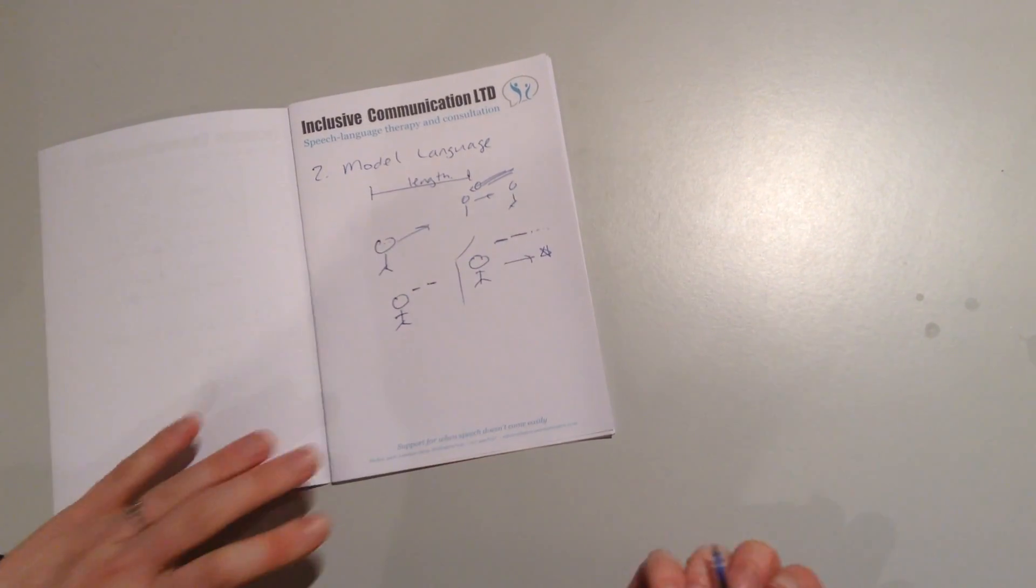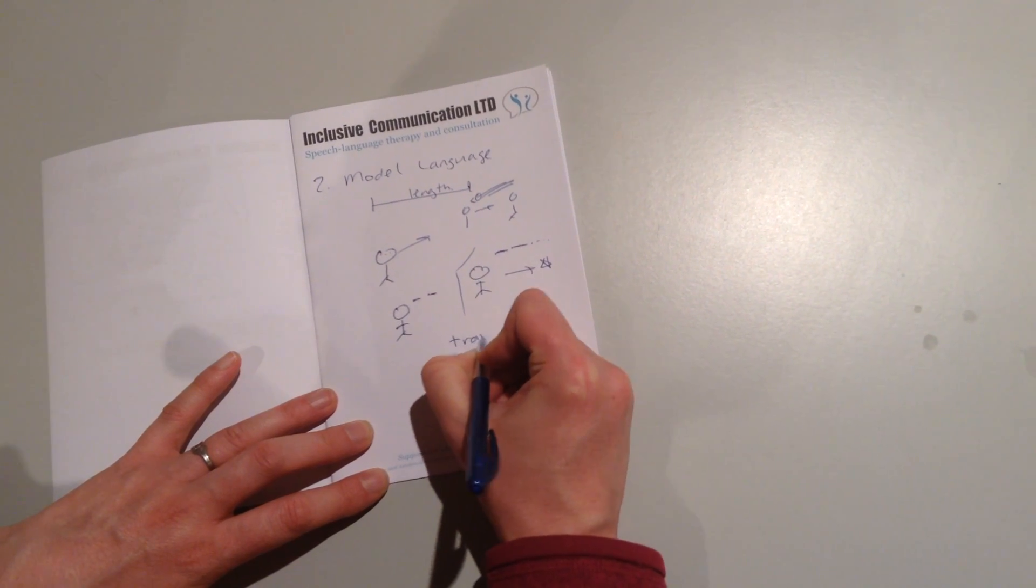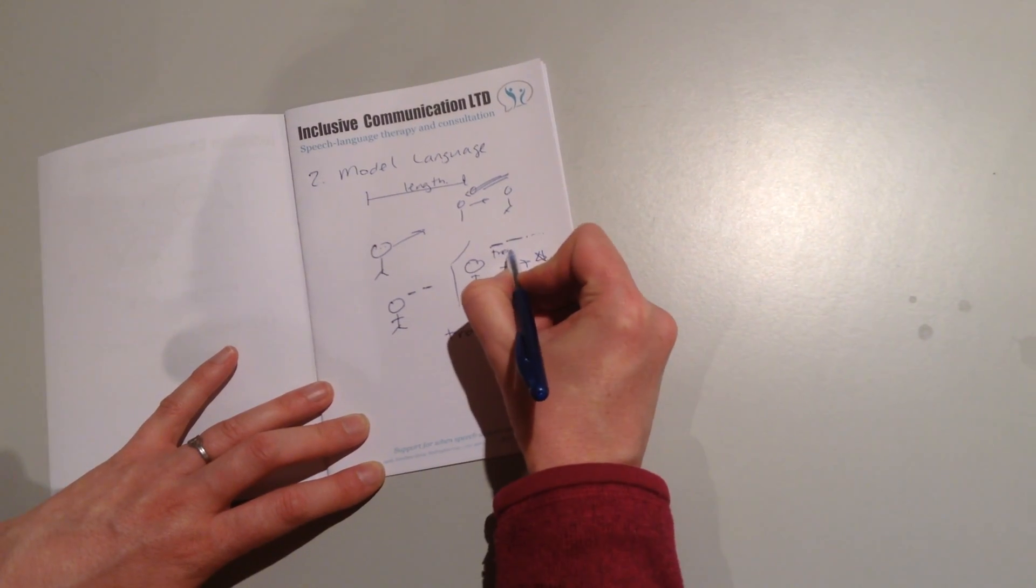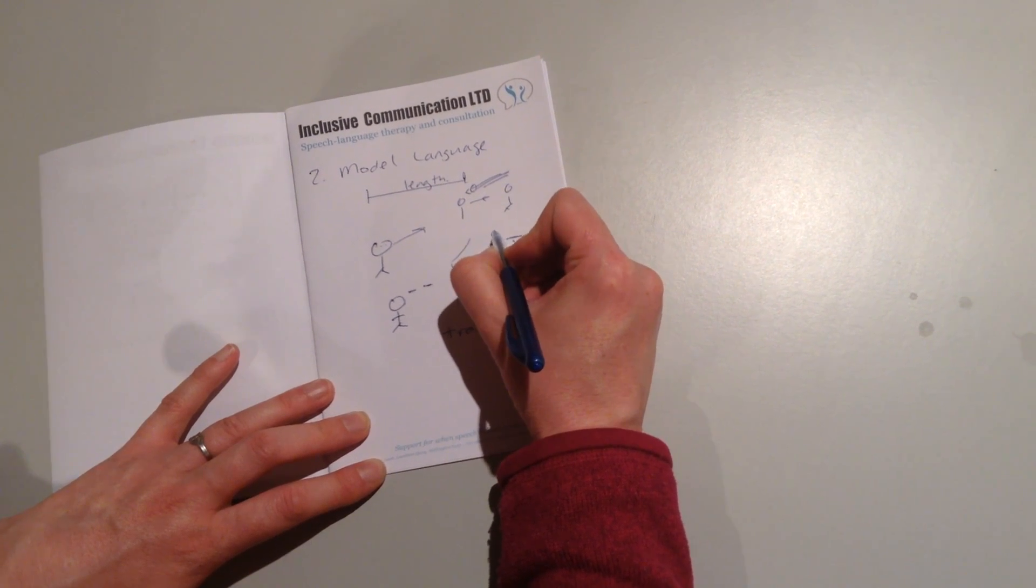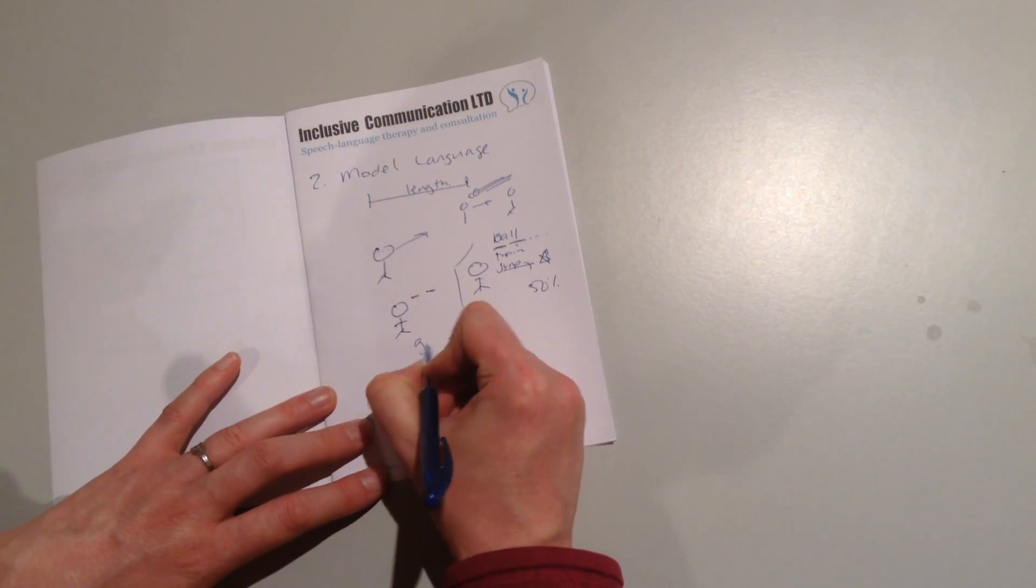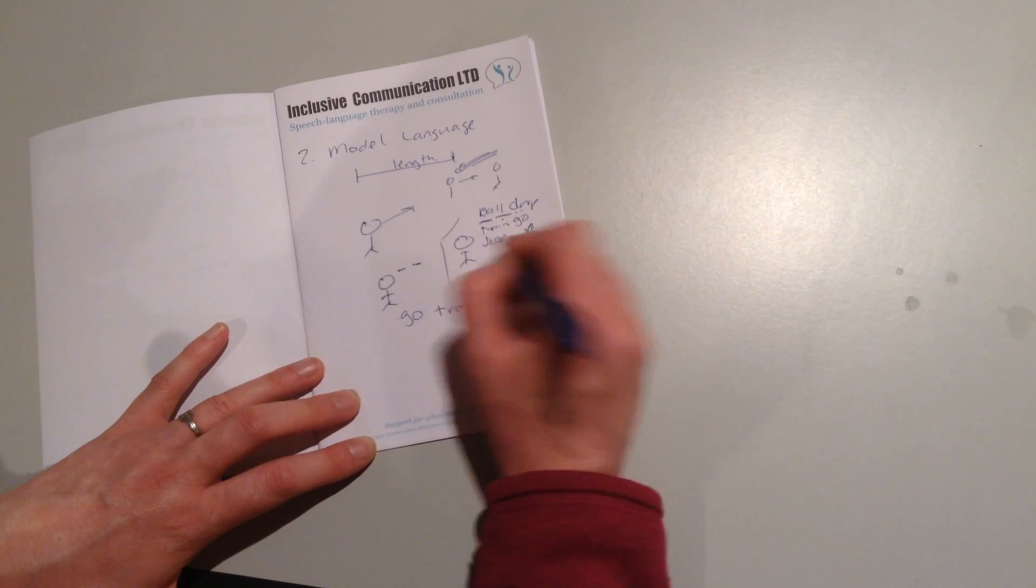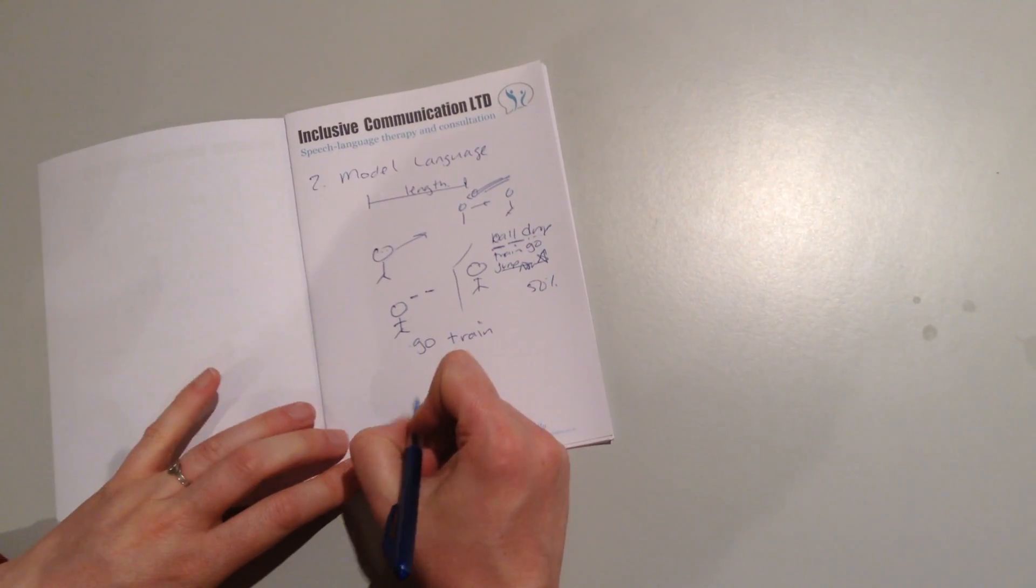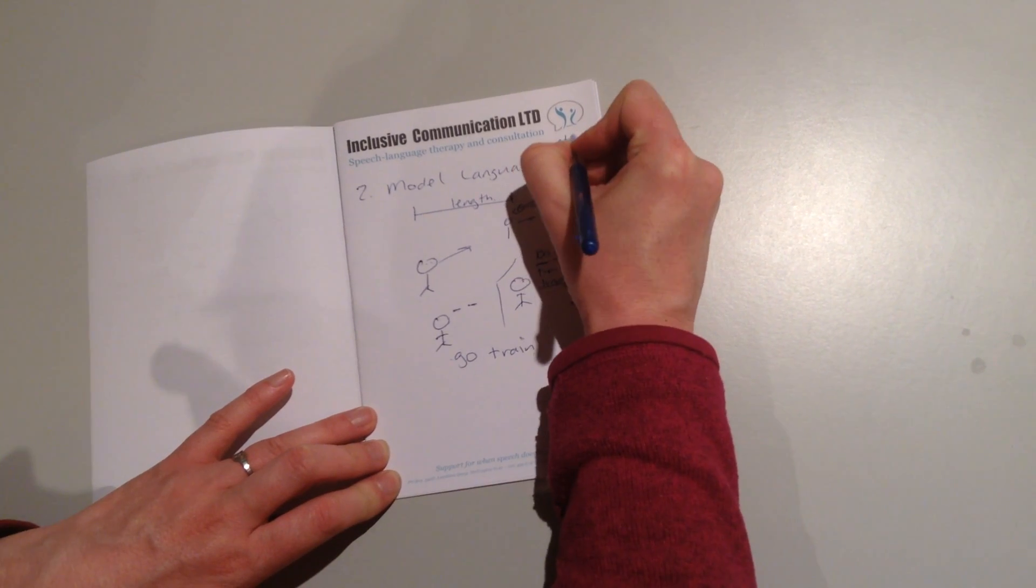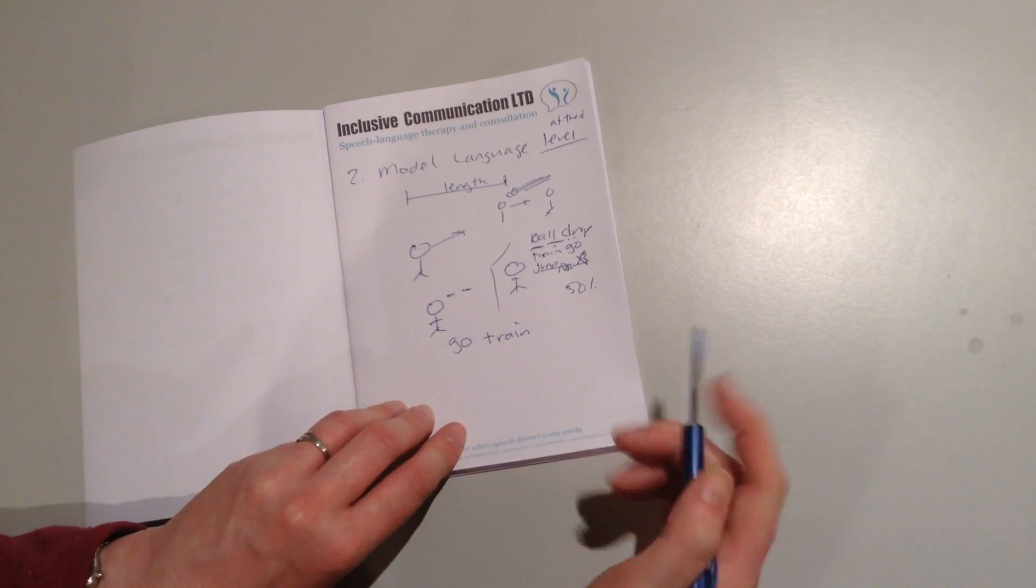So for example, if somebody's currently saying things like train, we're going to make sure at least 50% of the time they get to see us say words like train, ball, jump, and other words where we can get that reaction. If they're saying go train, then we're going to say ball drop, train, go, jump now, so they can see things at the level where they can immediately steal our language and try it out themselves. Sometimes we get tempted to give lots of beautiful language, but that can come later.